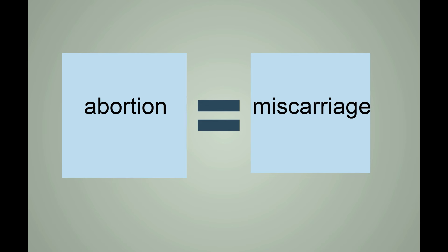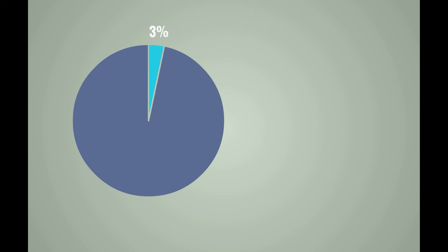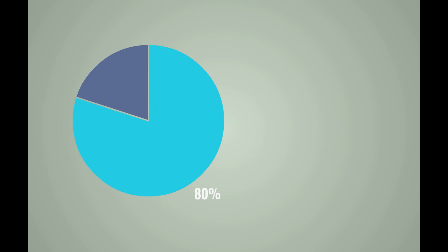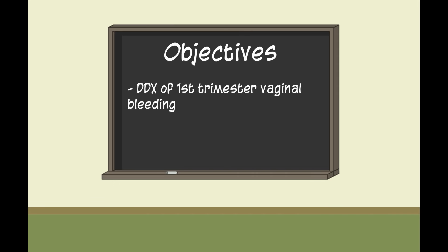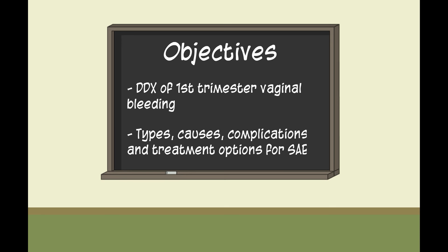This differs from the terms elective, therapeutic, or induced abortions, which will be addressed in a separate video. Approximately 80% of spontaneous abortions occur in the first 12 weeks of a pregnancy. The objectives of this video are to review the differential diagnosis for first trimester vaginal bleeding and to differentiate the types, causes, complications, and treatment options for spontaneous abortion.